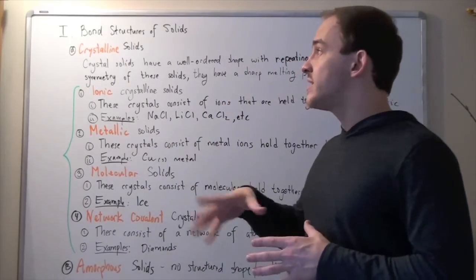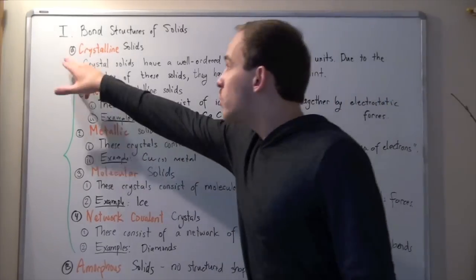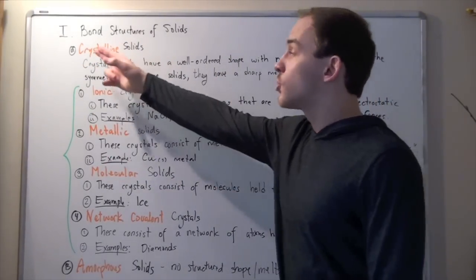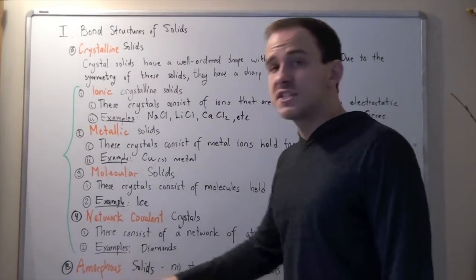Two main types of structures exist: crystalline solids, or simply crystals, and amorphous solids.